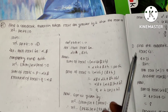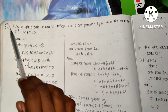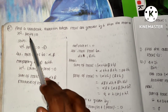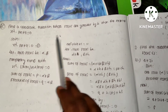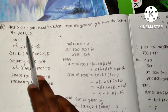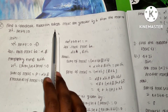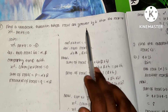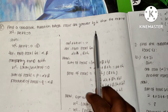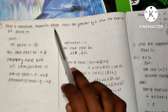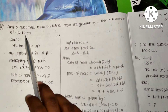Hello guys, welcome back to my channel Ramdhani Educational. In today's video I'll talk about problem 2C: find a quadratic equation whose roots are greater by h than the roots of the given equation. We have to find a quadratic equation ax squared plus bx plus c equal to zero whose roots are greater by h than the roots of this equation.